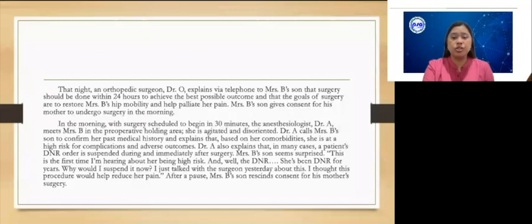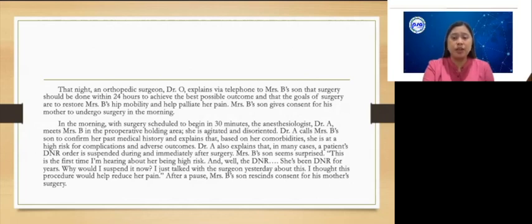In the morning, with surgery scheduled to begin in 30 minutes, the anesthesiologist, Dr. A., meets Mrs. B. in the preoperative holding area. She is agitated and disoriented. Dr. A. calls Mrs. B.'s son to confirm her past medical history and explains that based on her comorbidities, she is at high risk for complications and adverse outcomes. Dr. A. also explains that in many cases, a patient's DNR order is suspended during and immediately after surgery. Mrs. B.'s son seems surprised: 'This is the first time I'm hearing about her being high risk. And well, the DNR — she's been DNR for years. Why would I suspend it now? I just talked with the surgeon yesterday about this. I thought this procedure would help reduce her pain.' After a pause, Mrs. B.'s son withdraws consent for his mother's surgery.